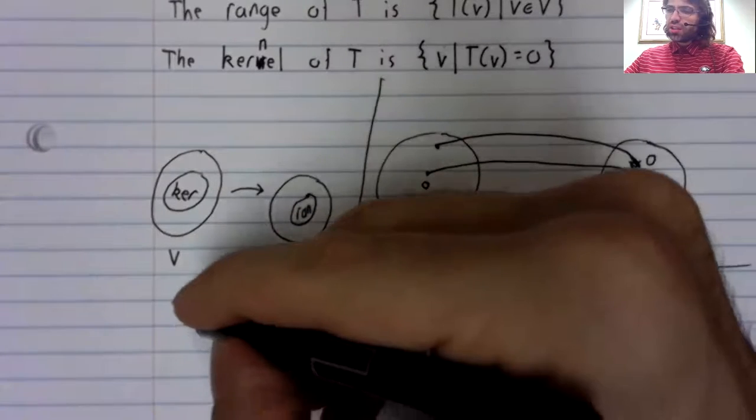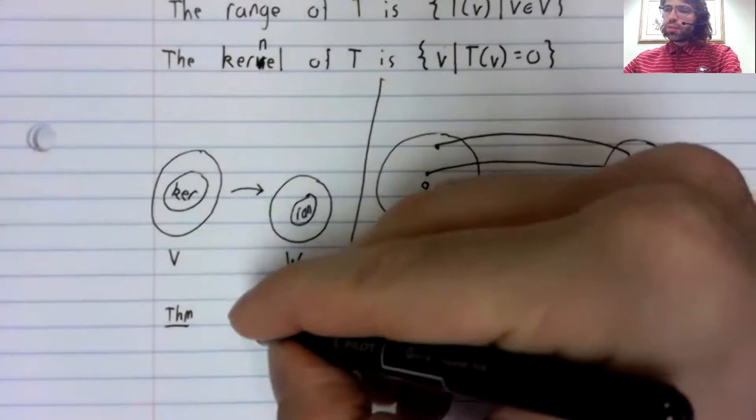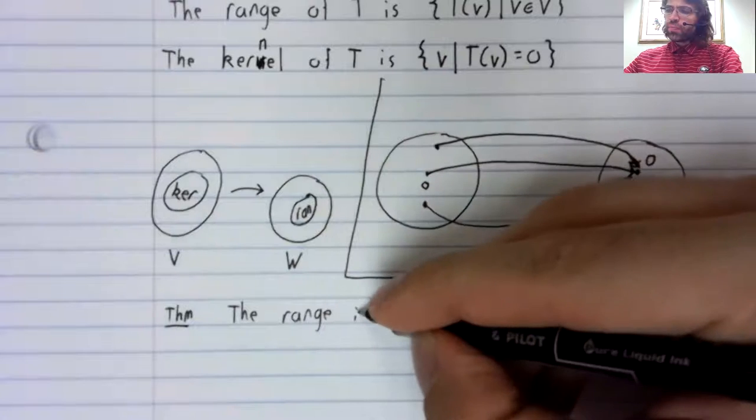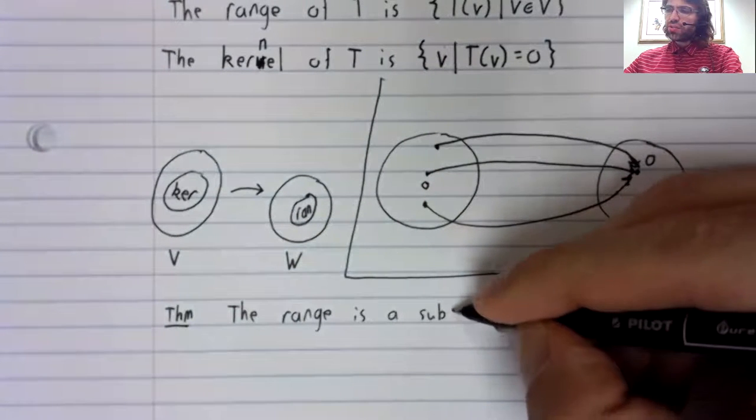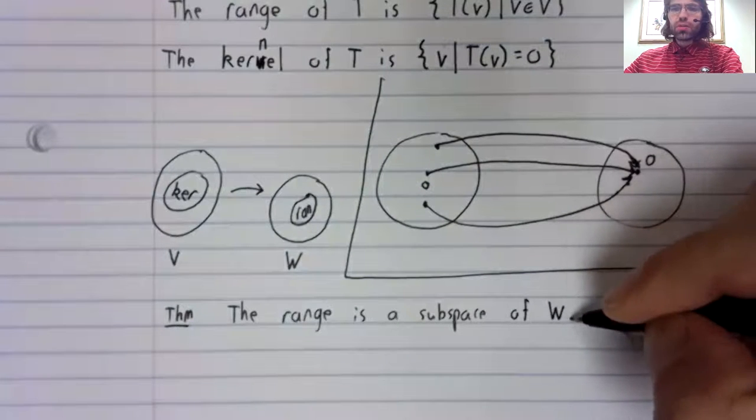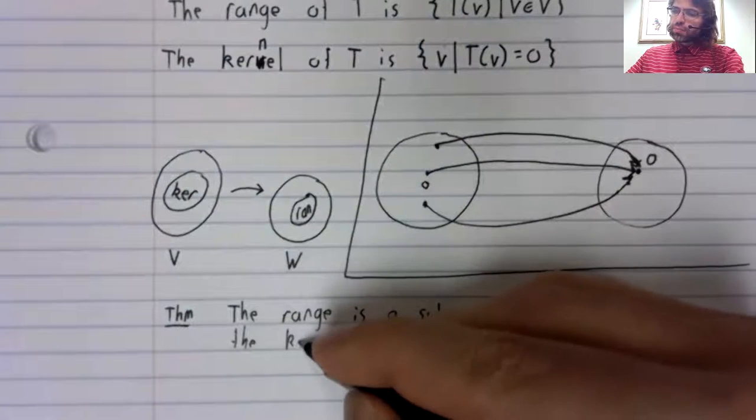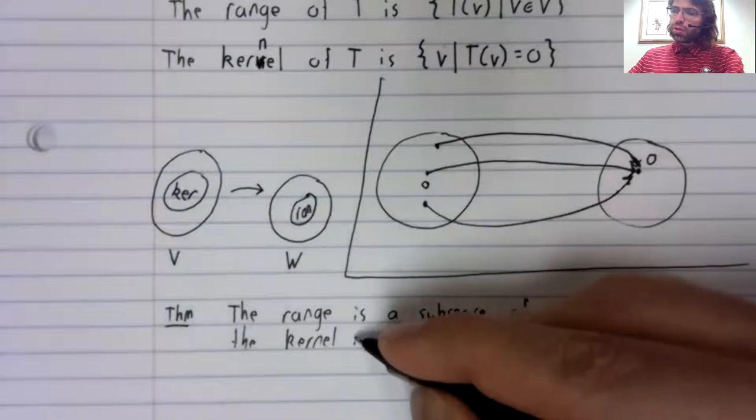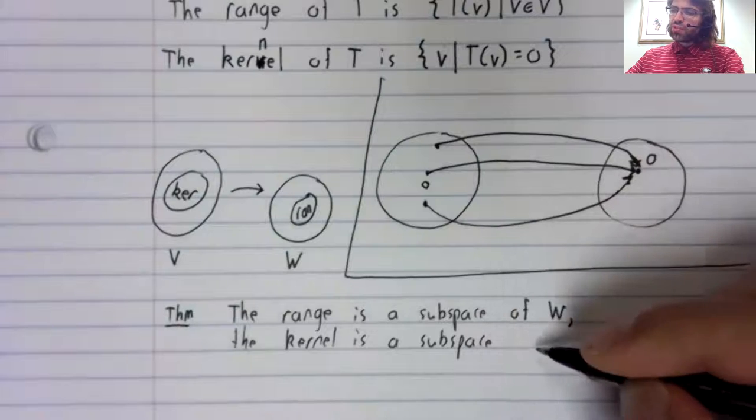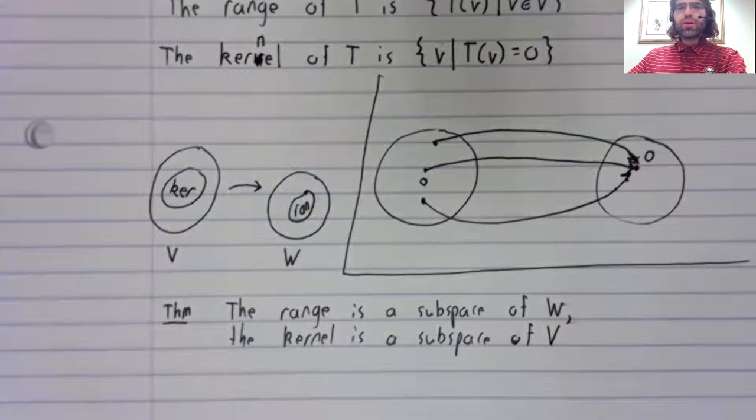That being said, they have something in common. Theorem: The range is a subspace. It's a subspace of W. The kernel is also a subspace. It's a subspace of V.